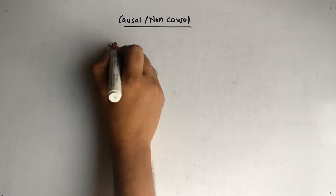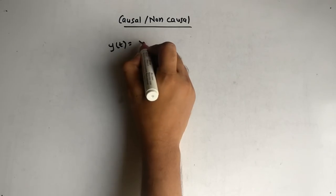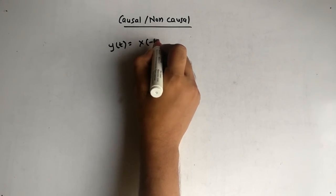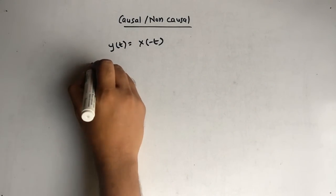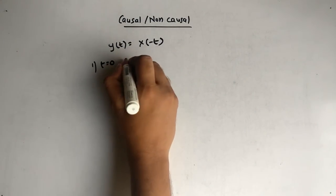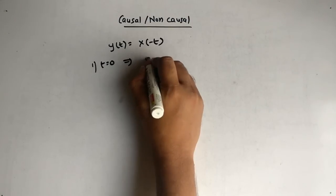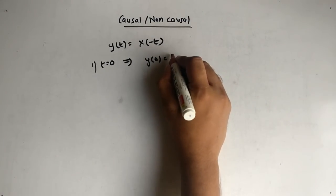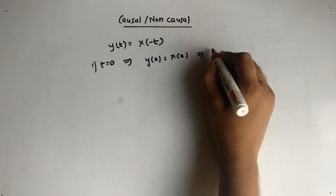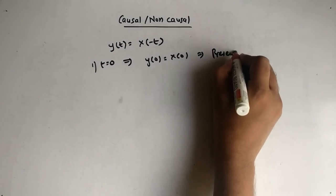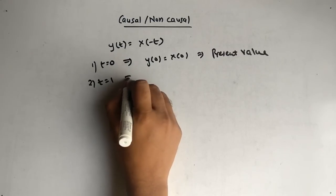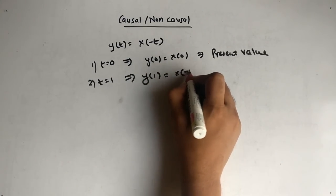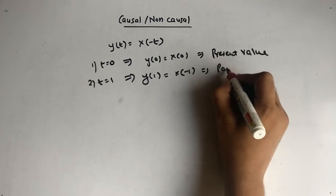There is one more unique function. Suppose y(t) = x(−t). Again we put t equal to 0: y(0) = x(0), so we get the present value. If t equal to 1: y(1) = x(−1), so we get a past value. So we have this two conditions — present plus past — and you might think the answer would be causal.